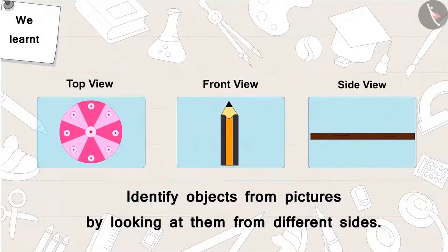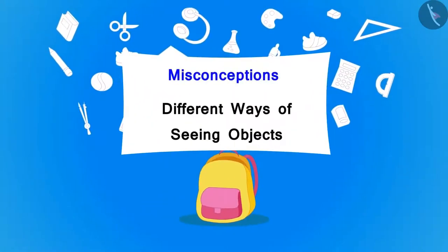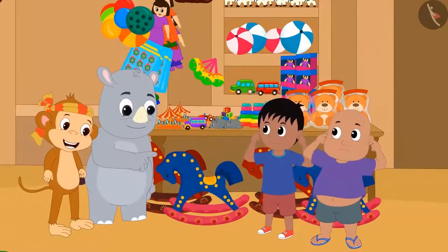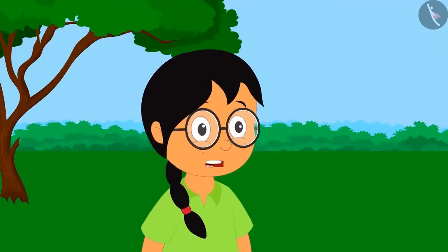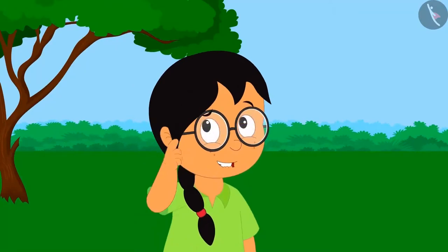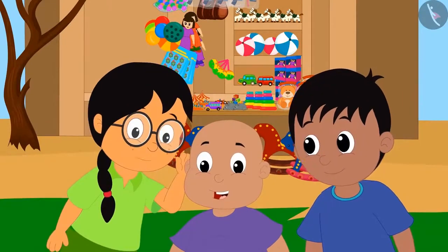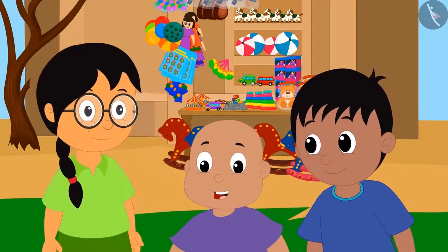In the previous video, we learned to identify objects with pictures looking at them from different sides. In this video, we will learn some misconceptions about seeing objects from different sides. When Gaggoo was teaching a lesson to Raju and Bablu, Meenu was watching them from a distance. Meenu decides to help Raju and Bablu.